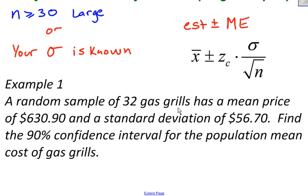A random sample of 32 gas grills has a mean price of $630.90 and a standard deviation of $56.70. Find the 90% confidence interval for the population mean cost of gas grills. Well, there's a number of different things that I know. First of all, I need to find the sample mean. That is right here, $630.90. I also need to know the standard deviation, that's right here, $56.70. Another thing that I need to know is the sample size, and that's 32.